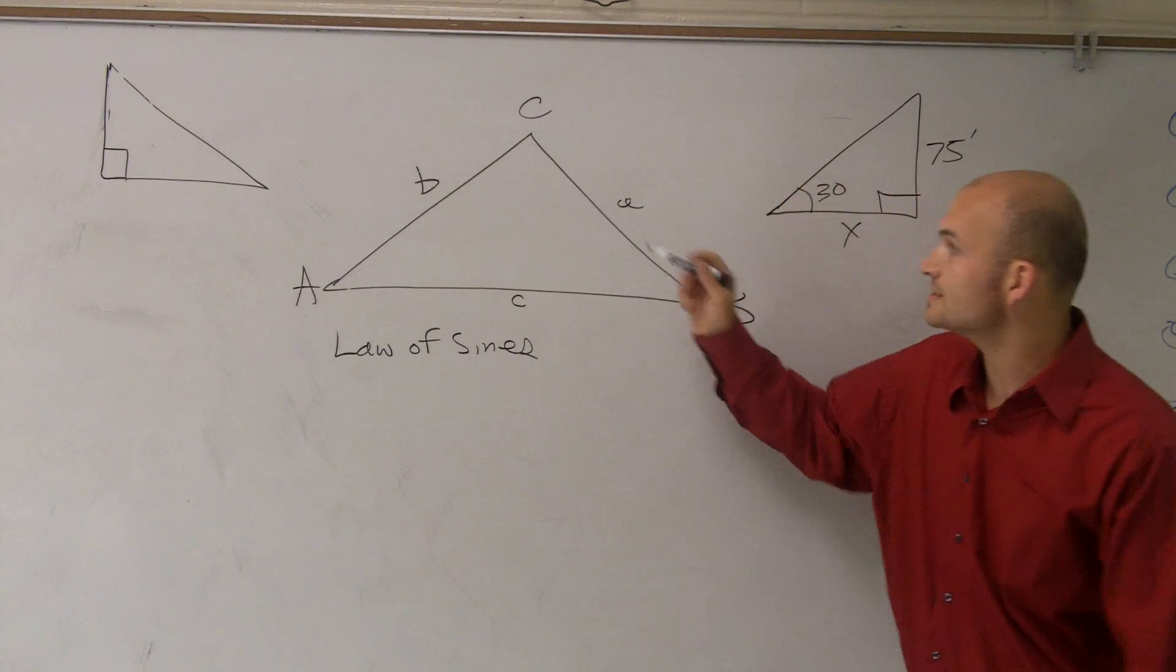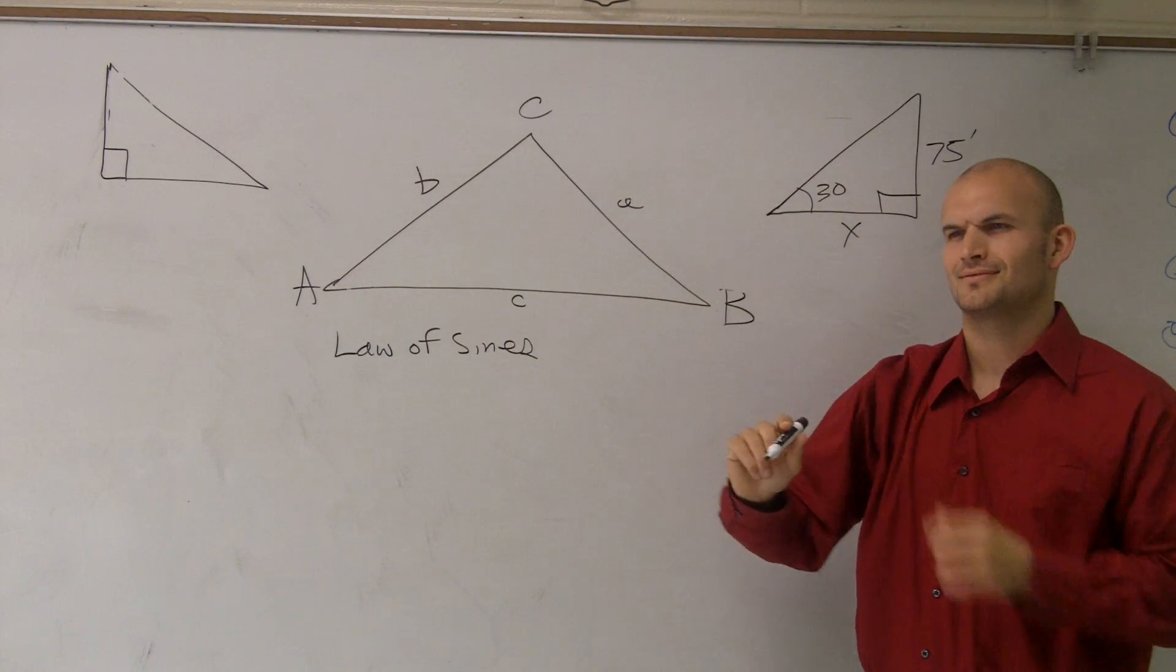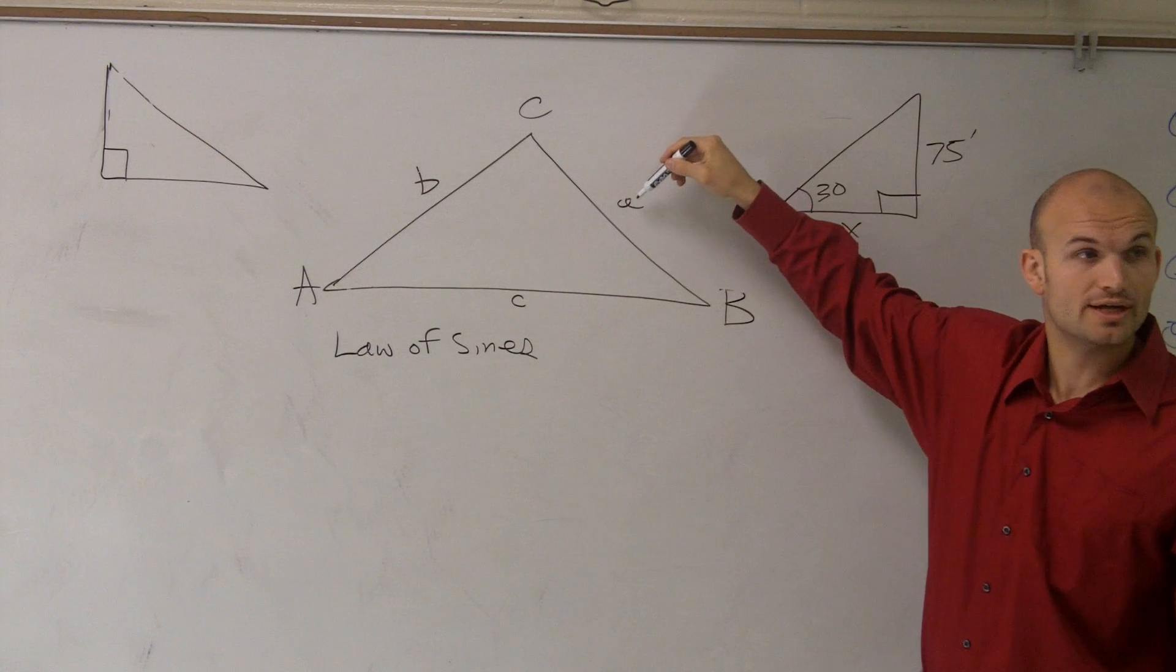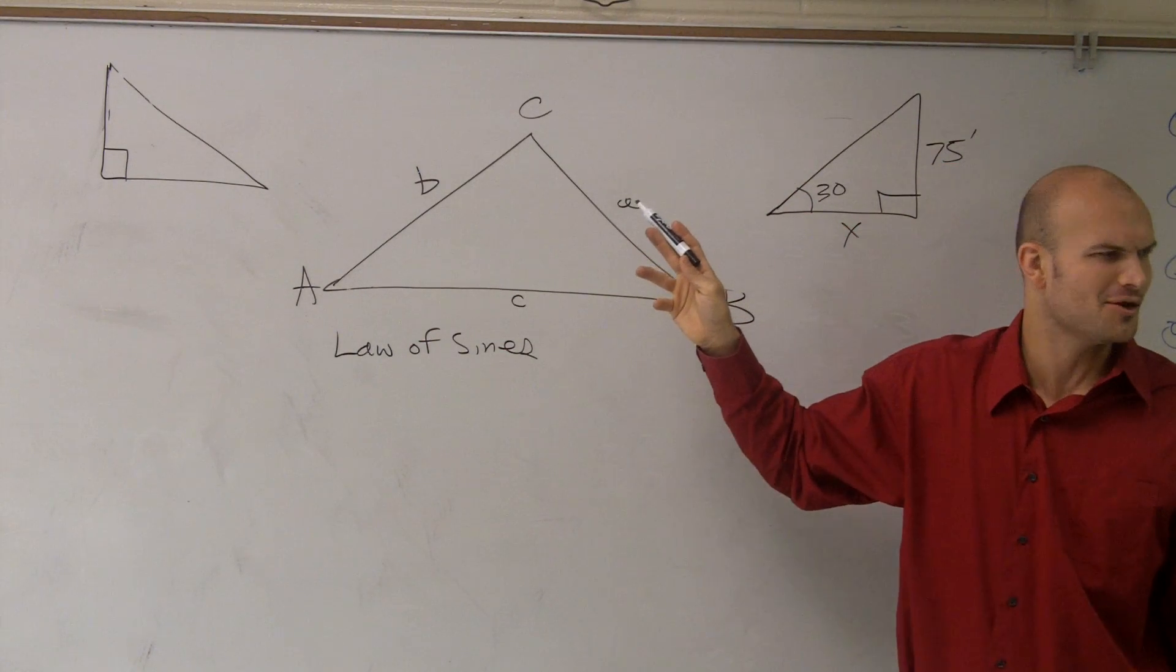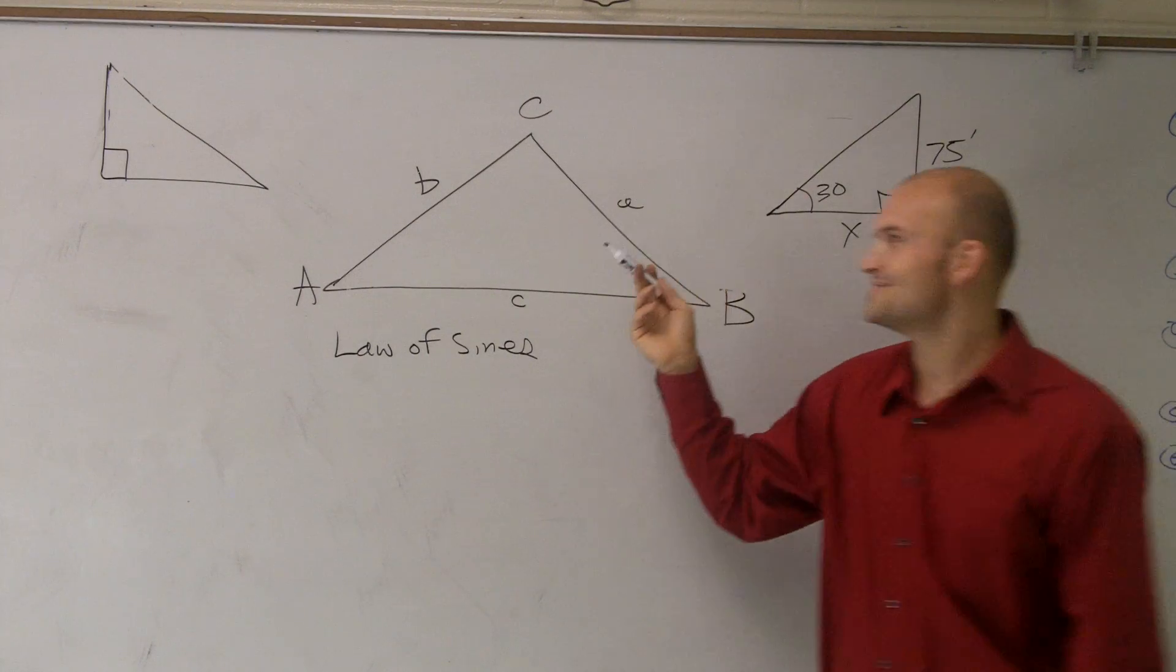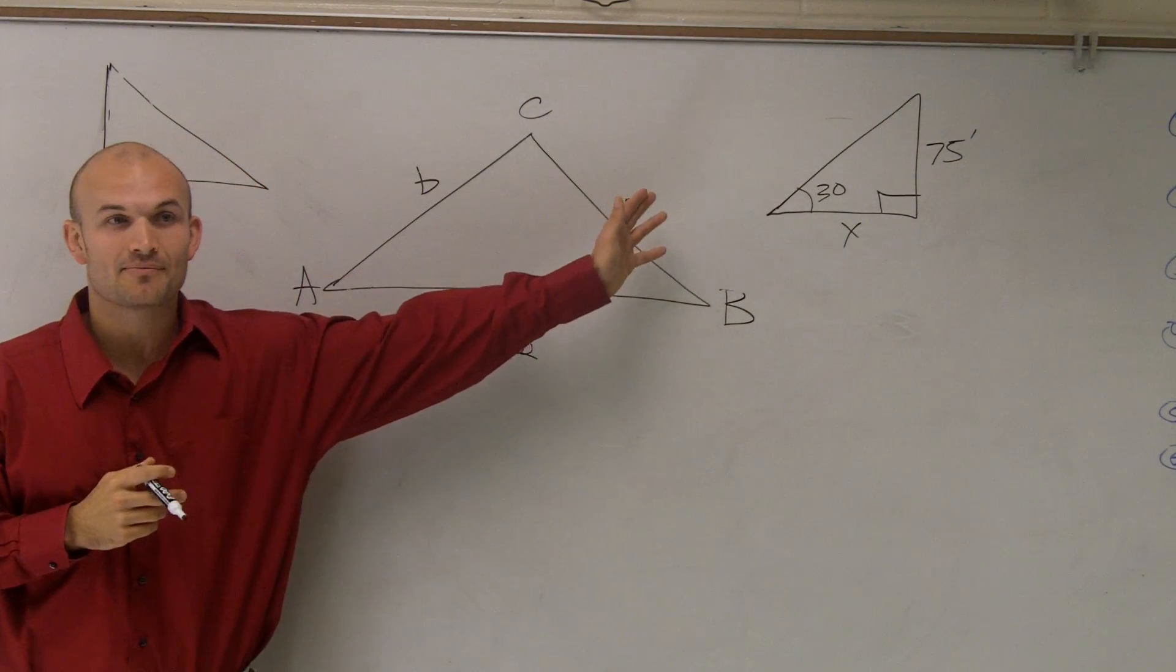Then, the next thing you notice is the side lengths. The side lengths are lowercase, and they're directly across from your angle. Lower case, right? Smaller, lower case, it's all good. So, lower case. Just notice that they're directly across from that.